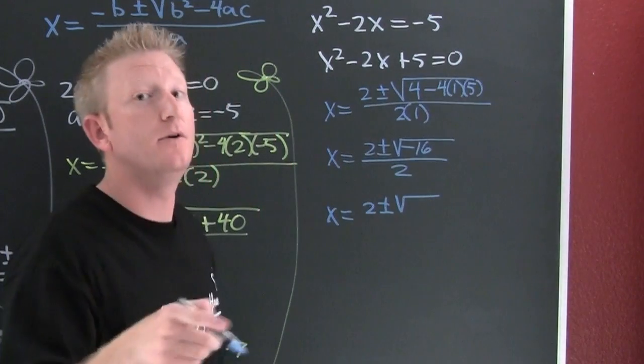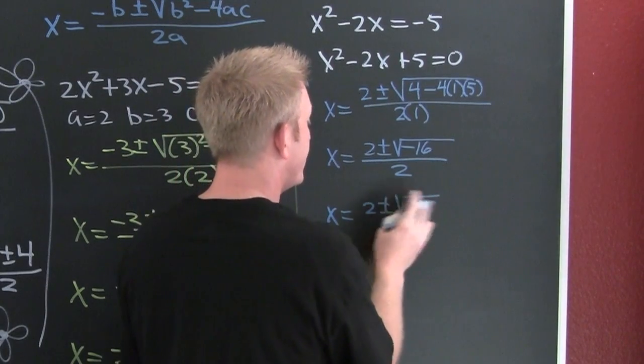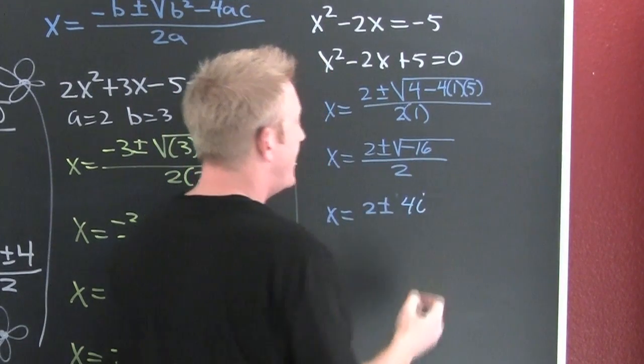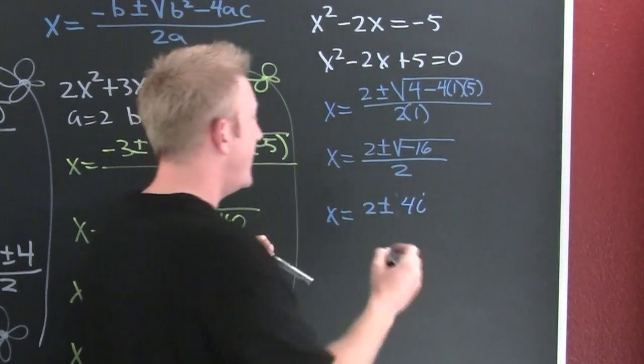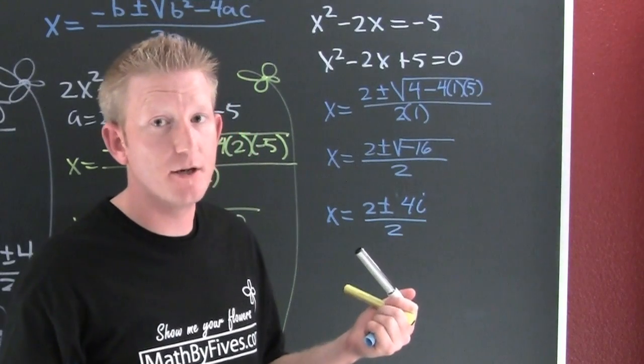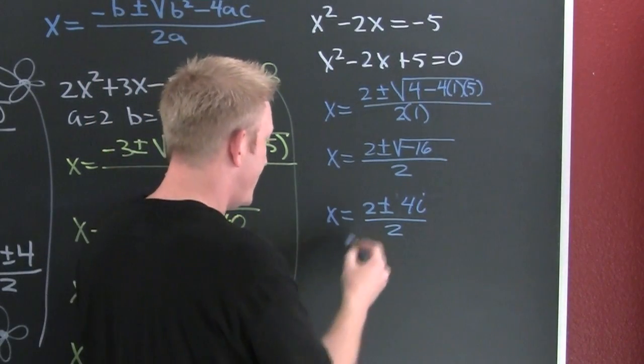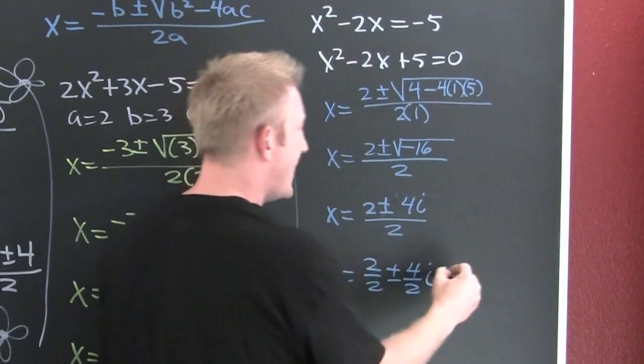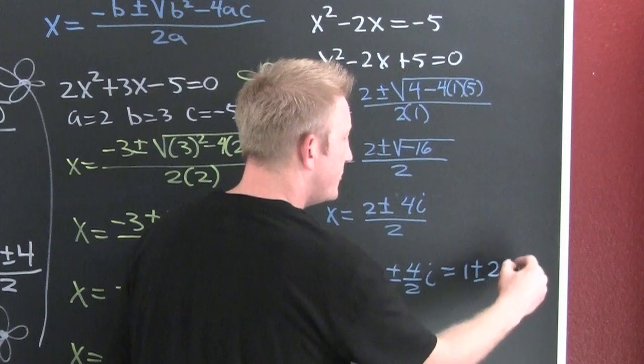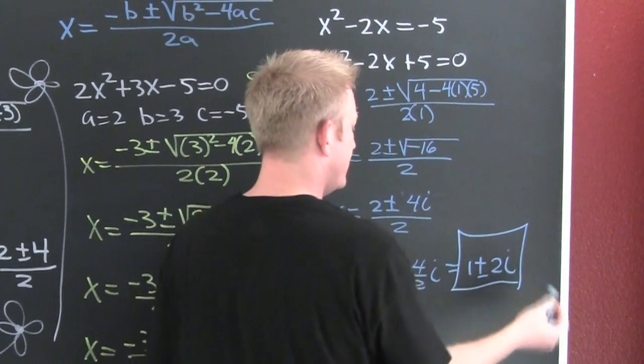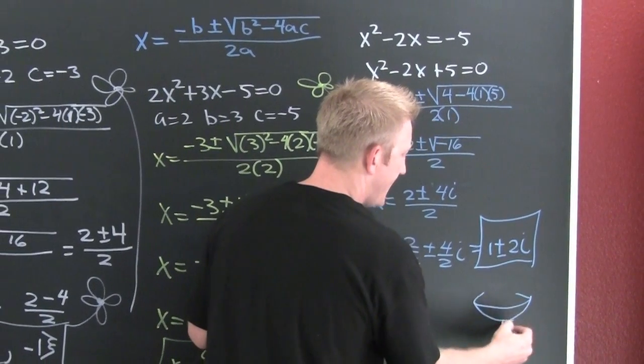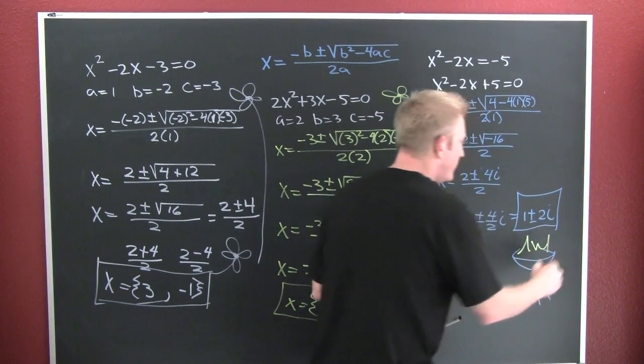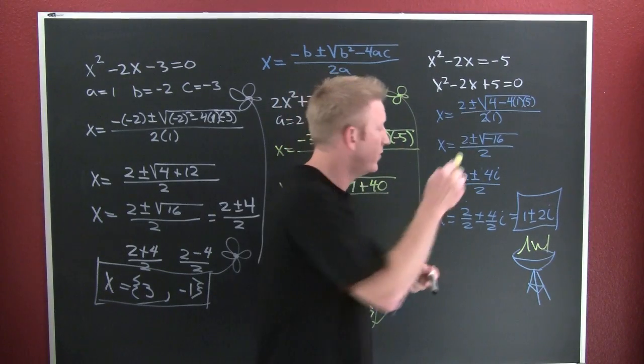The square root of minus 16 is 4i, divided by 2. Now you're not going to leave it like that because a complex number is in a plus bi form. This is x equals 2 over 2 plus or minus 4 over 2 i, which can be cleaned up to 1 plus or minus 2i. And that's how I like my math: well done.